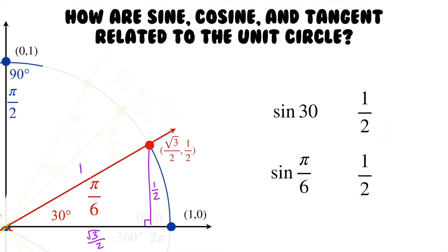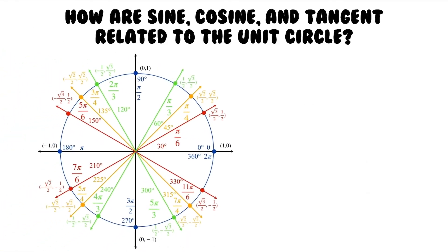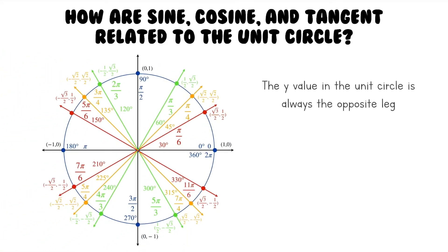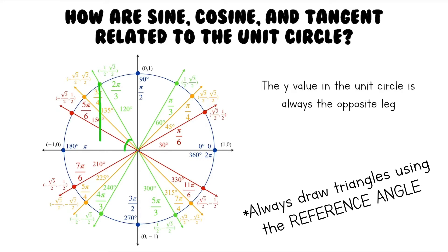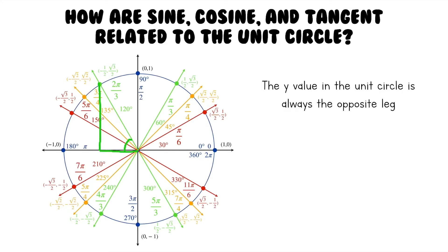You might notice that this one half is the exact same thing as the y value of this point right here. So let's take a look at our whole unit circle. For every point in the unit circle, the y value is always the opposite leg. Let's pick a random angle — the 120 degree angle. The reference angle for this triangle is right here, and if we draw a triangle, one of the legs is here, the other leg looks like this, and we have our right angle right here. The leg opposite this angle is this leg right here, and the length of this leg is the same as the y value of this point because this is a vertical line.